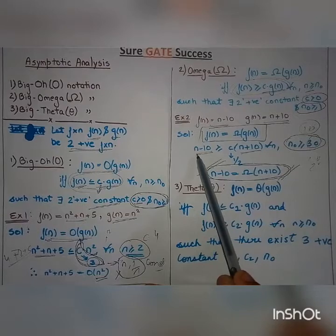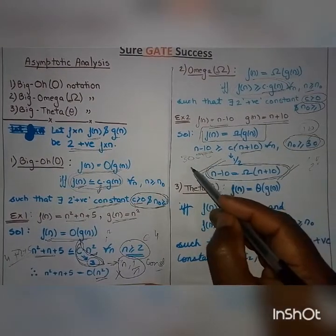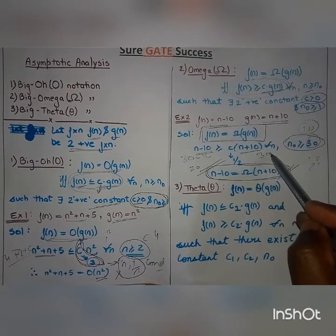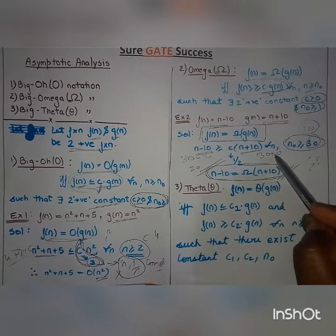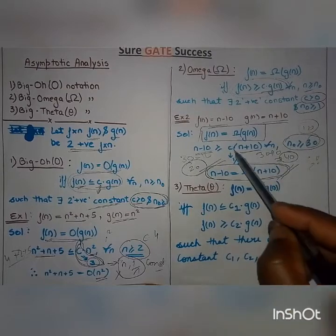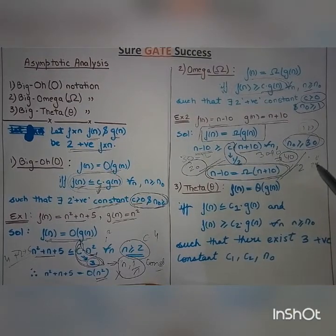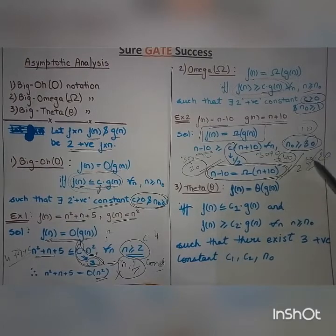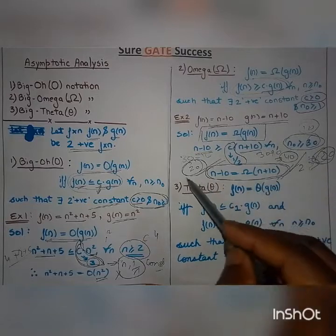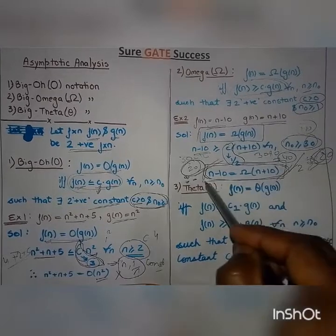Putting n = 30: f(30) = 30 − 10 = 20, and g(30) = 30 + 10 = 40. With c = 1/2, c·g(n) = 40/2 = 20. So 20 ≥ 20, which is true. Therefore this condition is satisfied and f(n) is Big Omega of g(n).